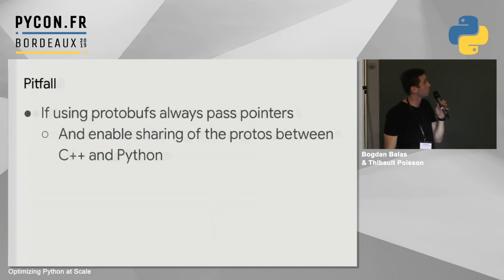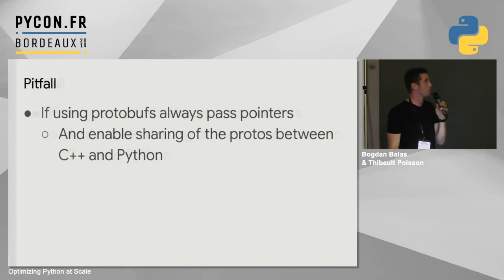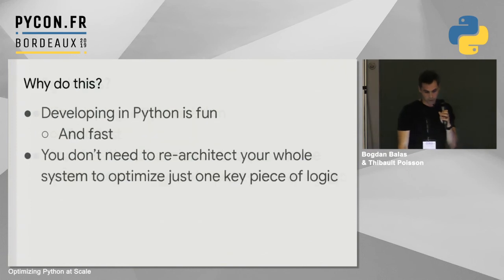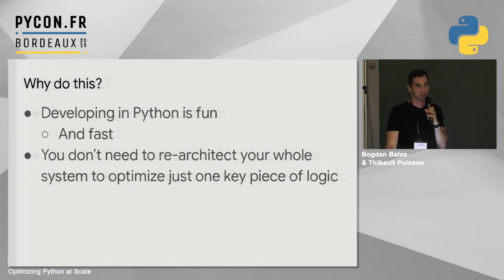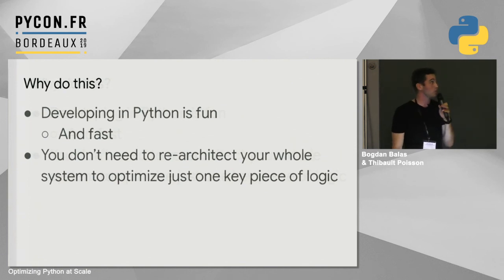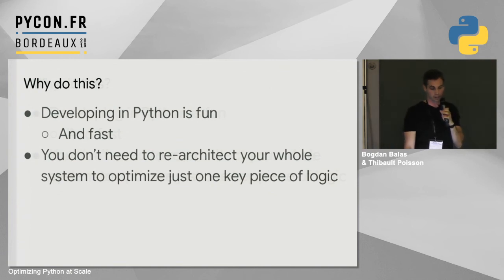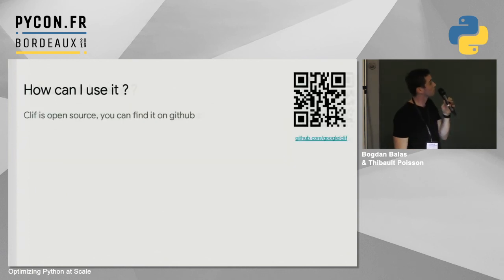This is just a very simple data mutation — you can do this for more complicated work. It really does offer you the ability to drop into C++ when you really need it and fall back to using Python for most of your day-to-day work. One pitfall: if you're working with protos, make sure you share memory between C++ and Python so you're using the same proto — you don't want to do serialization back and forth, which can be very expensive. The key takeaway is that Python is a great language and developers are much happier working in it. But if performance becomes an issue, identifying key bottlenecks and falling back to C++ for those — instead of re-architecting your whole system — is very beneficial. Clif is open source at github.com/clif.